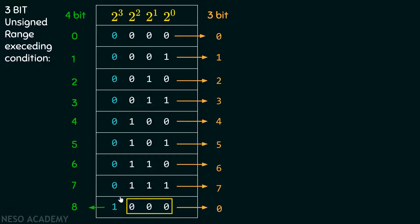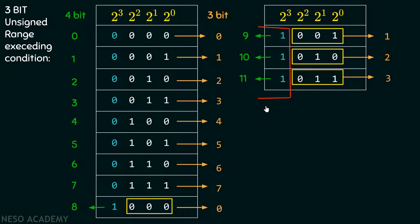In 3-bit representation, this 1 bit is hidden, and with the rest of the bits this is equal to 0. If we want to represent the value 1 higher than that, that is 9, we won't be able to represent that as well because this 4th bit is not available to us — we are available with just these 3 bits. Therefore, whatever is there inside these 3 bits, we would be able to represent that only, and that is equal to 1 in this case. If we try to represent the value 10, similarly we won't be able to represent that because this bit is not available to us; this is actually equal to 2 in decimal.